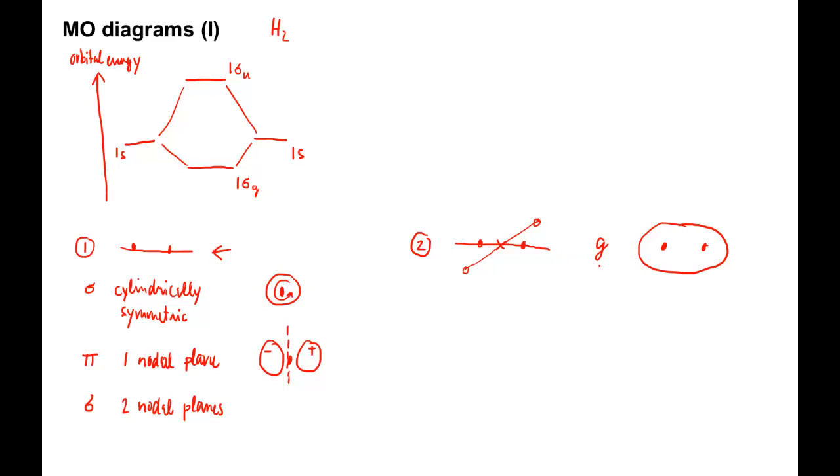An MO whose value changes sign under this inversion is antisymmetric and is labeled with a subscript U, which stands for ungerade, German for odd. Here is an example.